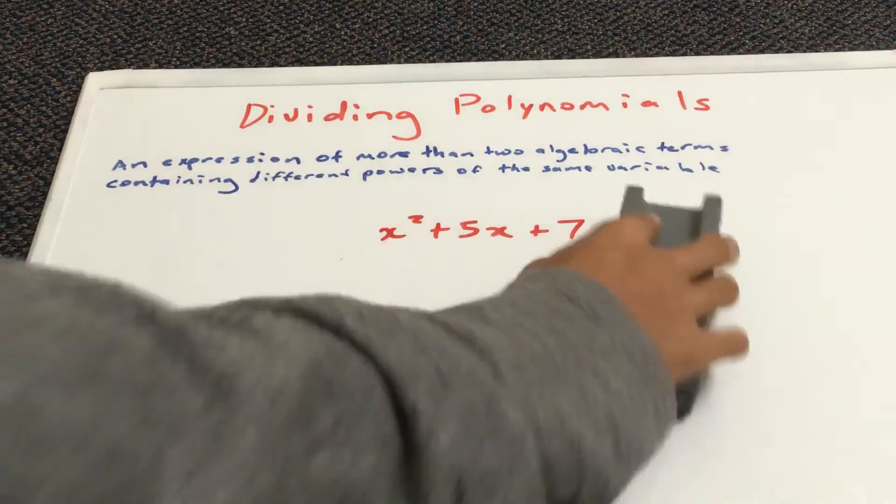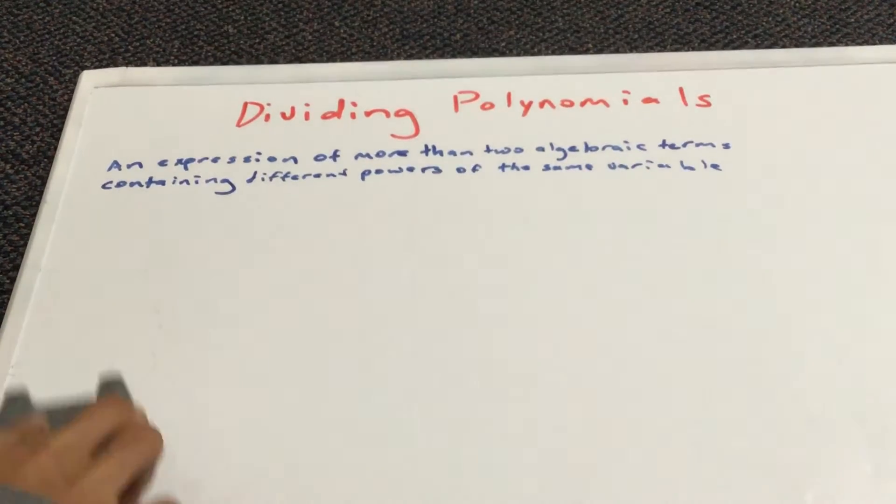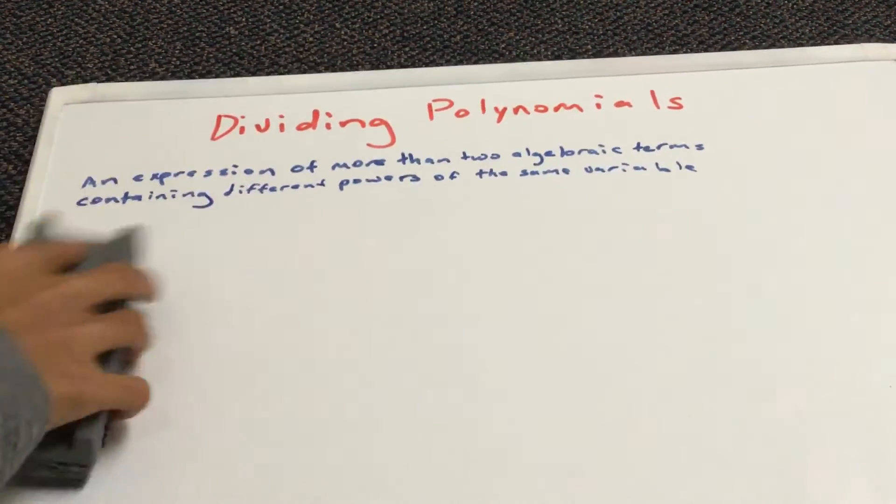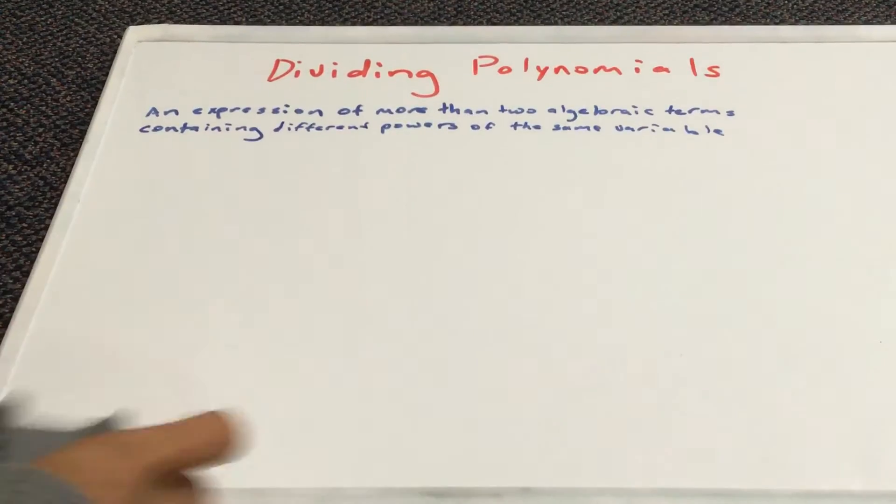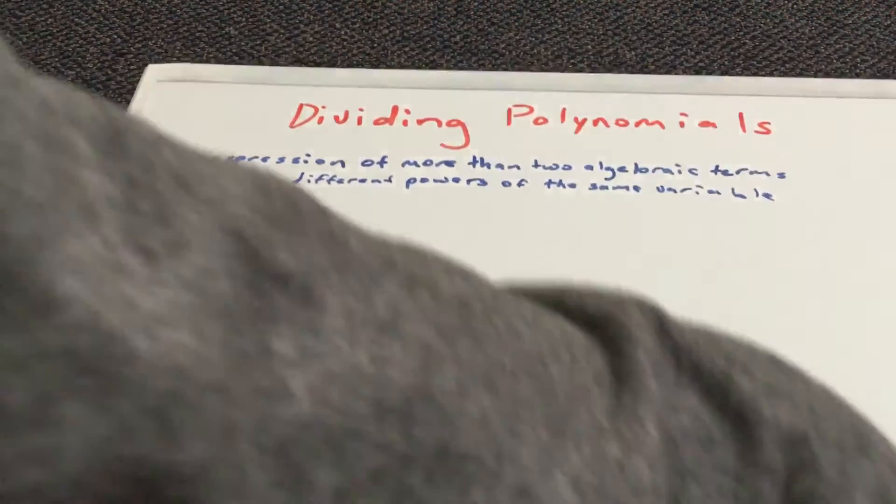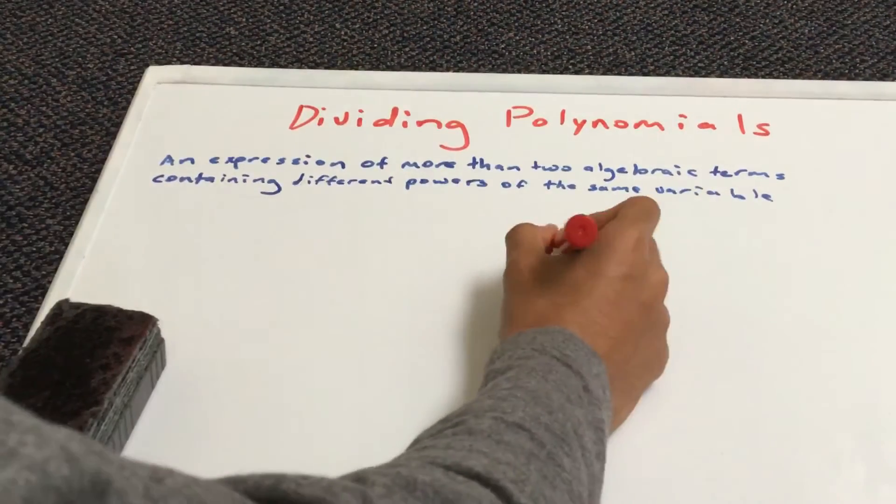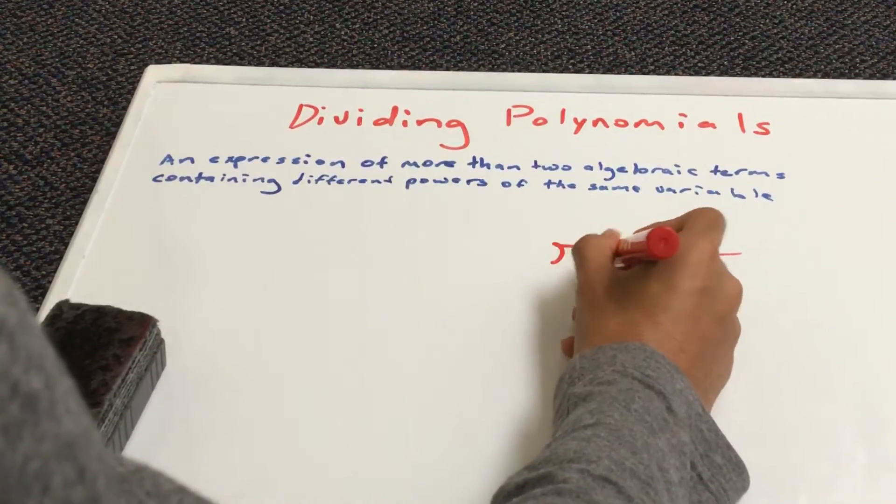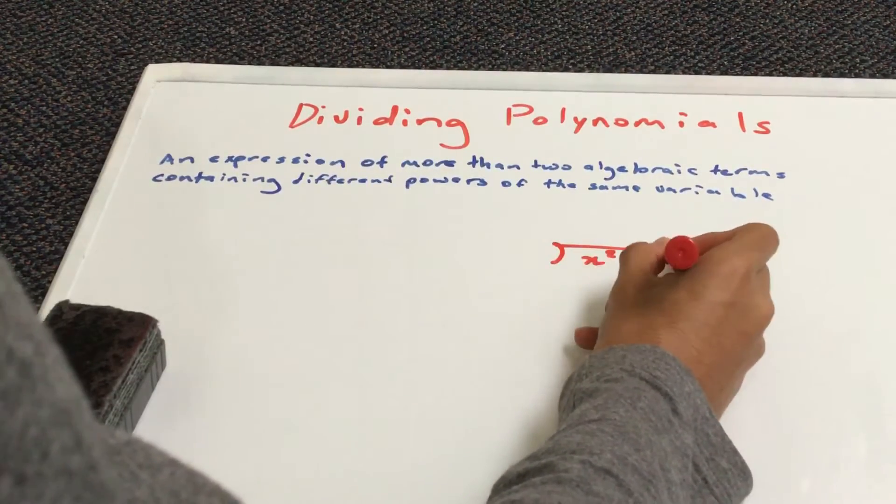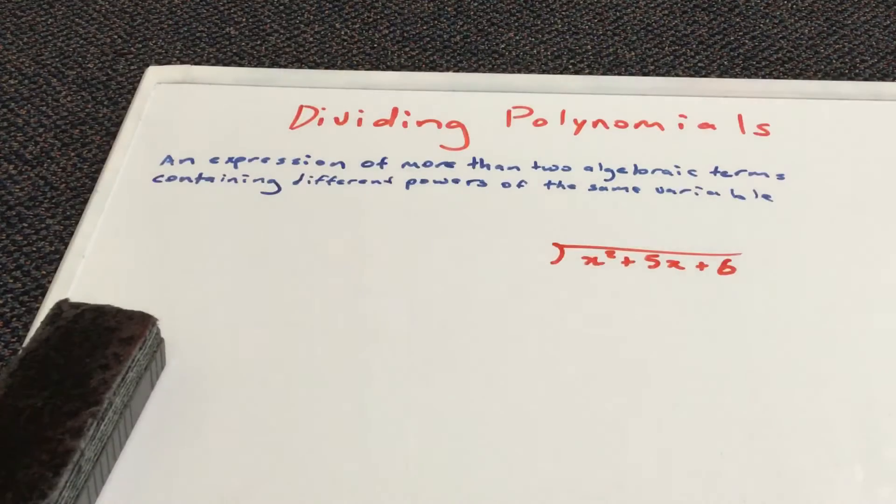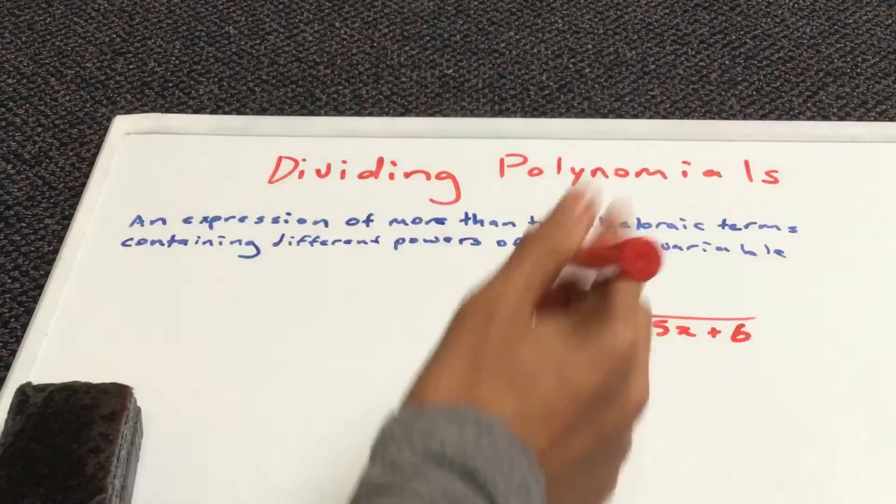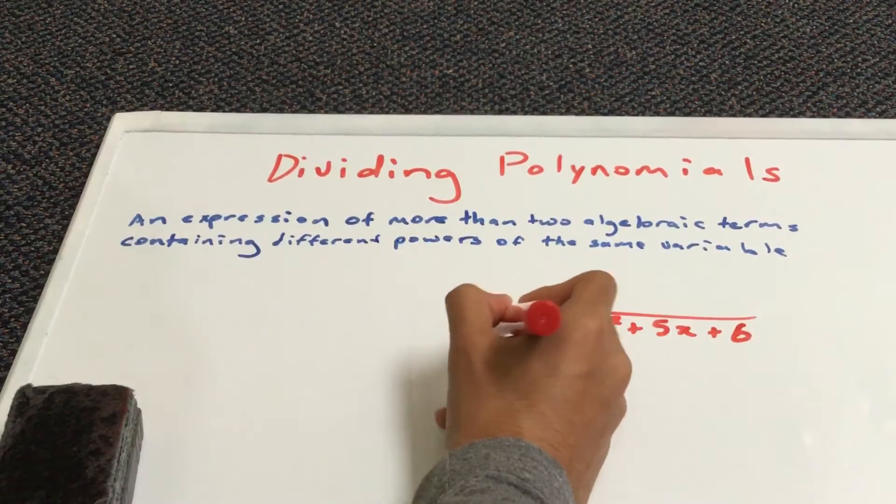Okay, so we're going to use this to divide by another polynomial. Our example is going to be x squared plus 5x plus 6. We're going to divide this by x plus 3.